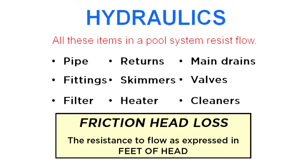Friction head loss — all the components in a swimming pool or spa system can contribute to the resistance of flow. The following components, since they have water flowing through them, have a friction head loss factor. This factor is dependent on the size of pipe and GPM. Those components include pipes, fittings, return eyeballs, valves, skimmers, main drains, filters, heaters, and cleaners. There are many more to be added, but these are the most common.